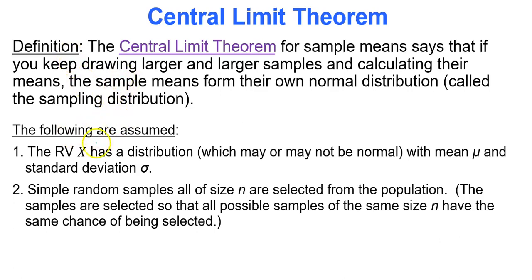The following are assumed: the random variable x has a distribution — which may or may not be normal — with mean mu and standard deviation sigma, and simple random samples all of size n are selected from the population. As that sample size goes up — whether 10, 20, or 30 — the distribution of the sample means will become approximately normal.